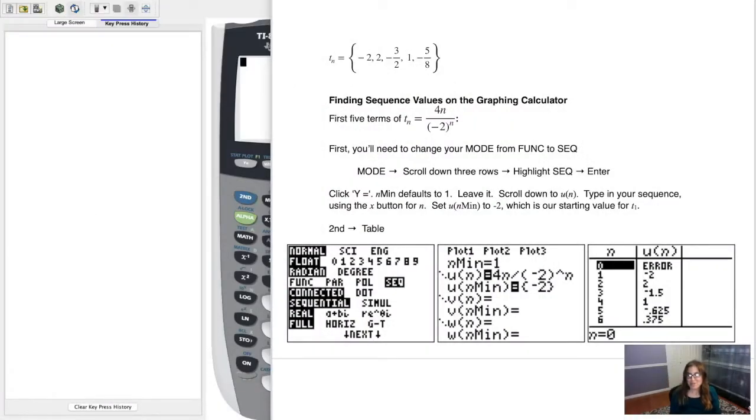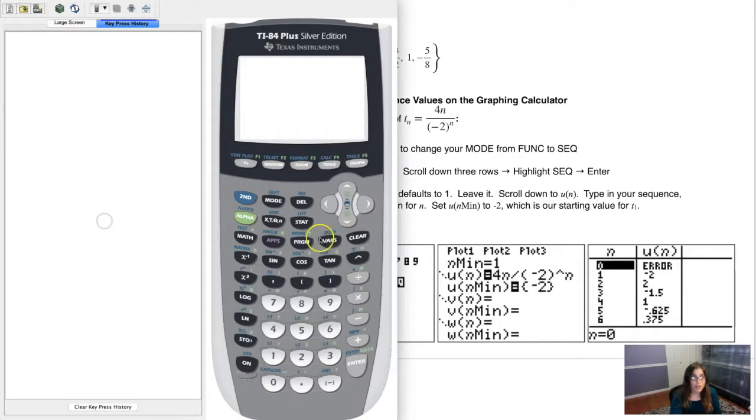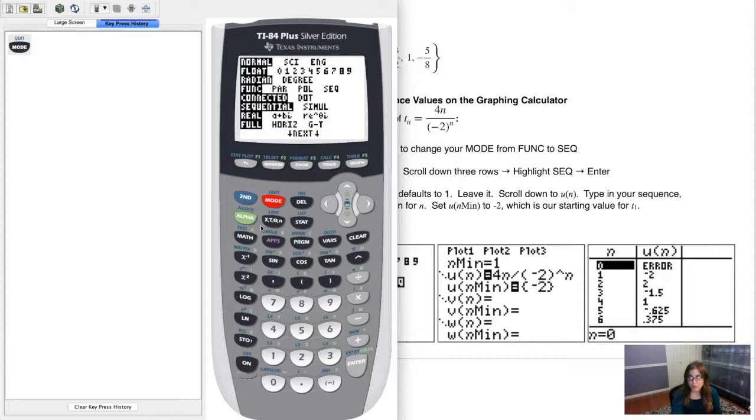Hey, Math 31. I want to show you a different way of finding sequence values on your calculator. We could do the second stat option, go into ops, and punch out the sequence just like we did in example 1, but here's a more intricate way, and it's just kind of cool some of the features it has. So if you want to go into something called sequence mode in your calculator, this is how you do it. Hit your mode key.